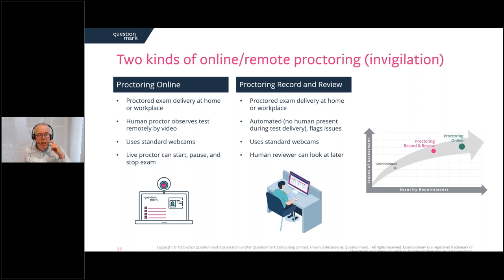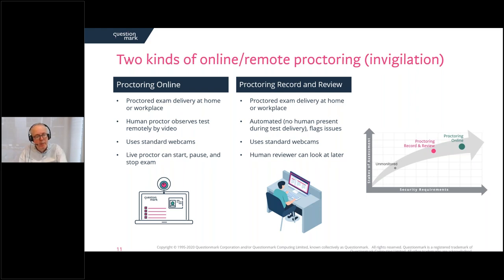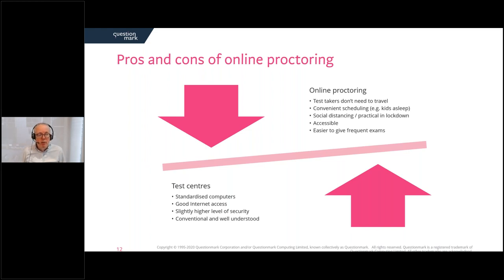In proctoring record and review, again taken at home or the workplace with a webcam, but it's automated. The webcam records what's happening, can flag issues but doesn't usually do anything live — it flags them for later review. A human reviewer then looks at flagged areas: are there two people on screen, is the person who took the test the right person? With current technology, proctoring online with a human is a little more secure but also a little more expensive. Proctoring record and review is quite widely used, particularly in the education and academic sector.